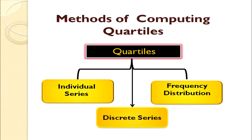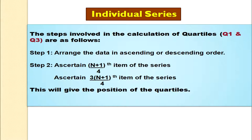Let us calculate and see what methods we can use to compute quartiles. Quartiles can be calculated in 3 different series: individual series, discrete series, and frequency distribution. For individual series, step 1 is to arrange the data in ascending order. Step 2: for Q1, find the (n+1)/4th item, and for Q3, find the 3(n+1)/4th item of the series.